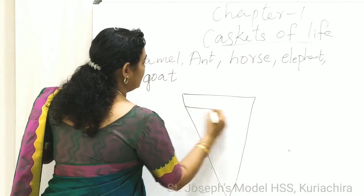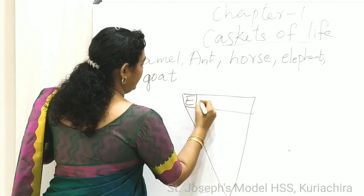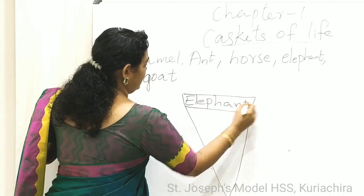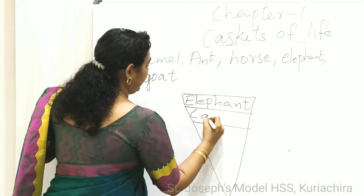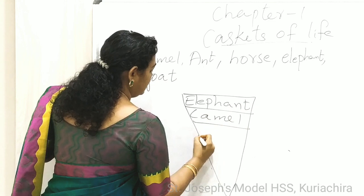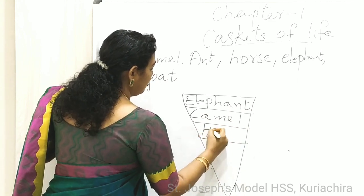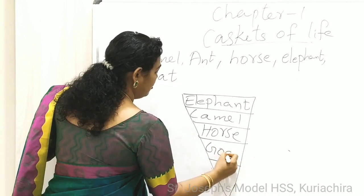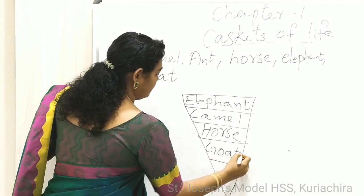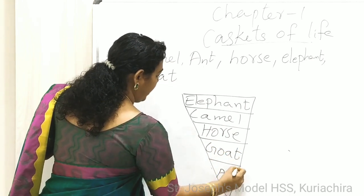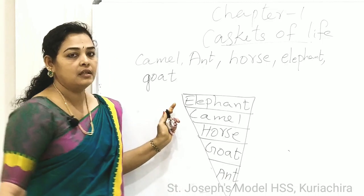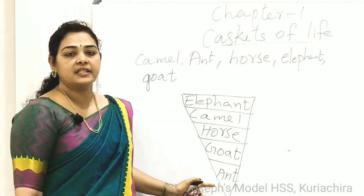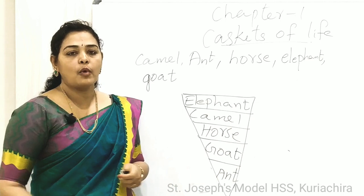First, elephant. Then second, camel. Then third, horse. Then goat. Then ant. Elephant is the biggest one and ant is the smallest one.